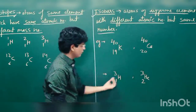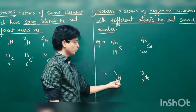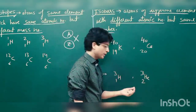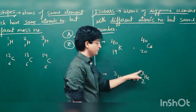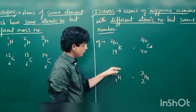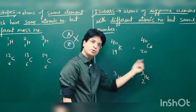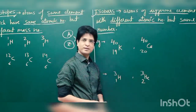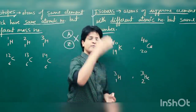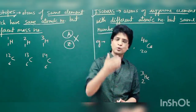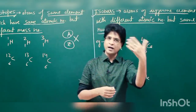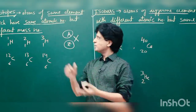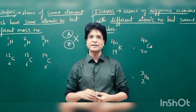Let us take one more example. This is an isotope of hydrogen and this is an isotope of helium. They both have the same mass number — same number of neutrons plus protons — but different number of protons, that is different atomic numbers. So they could ask you which of the following species are isotopes, which are isobars, and so on. Let us discuss a few more species.